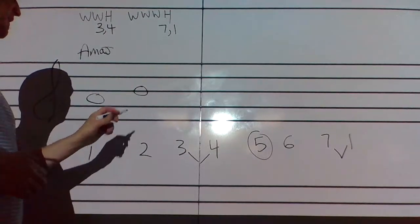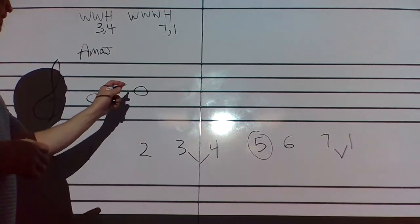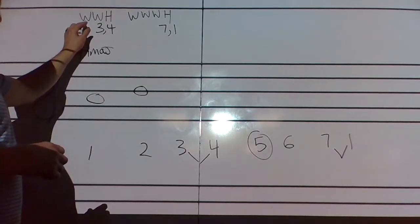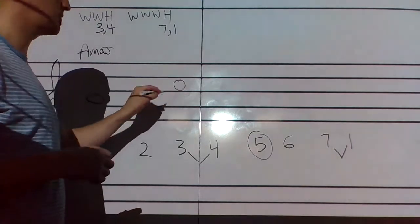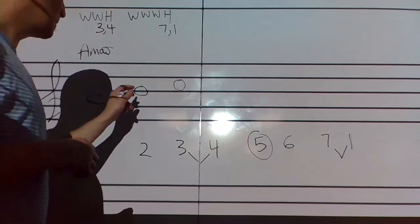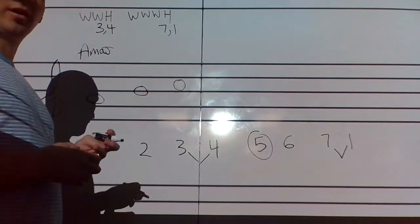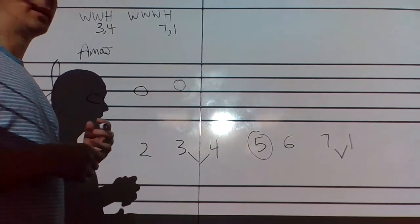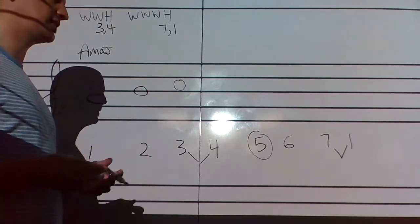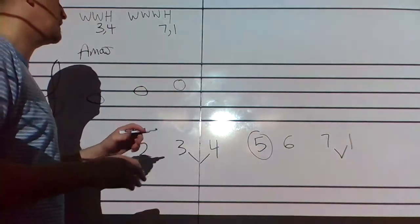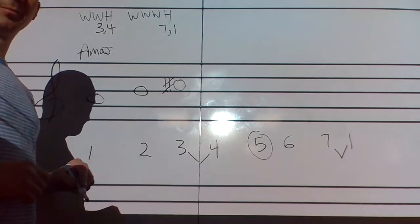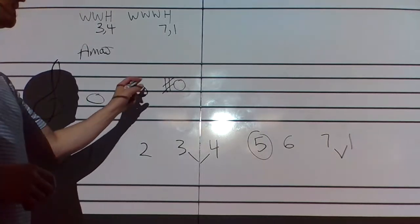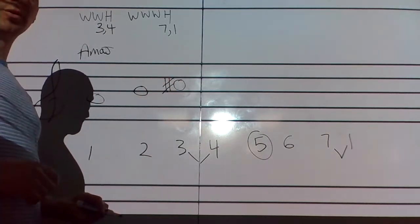I'm on A, which means the next note has to be some kind of B. A to B is a whole step, so I'm good. I need another whole step. I'm on B, which means the next note has to be some kind of C. B to C is how far? It's a half step. I need a whole step. What can I do to that C? I need to push it out further from the B, make it higher. The way I do that in music is by adding a sharp. So now it's C sharp. B to C sharp is a whole step.